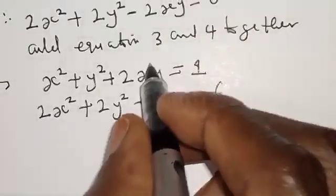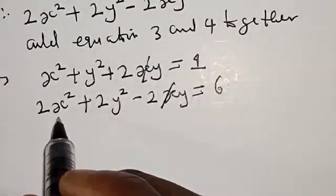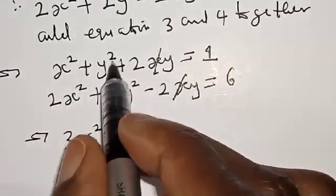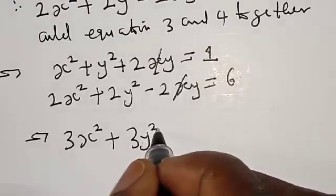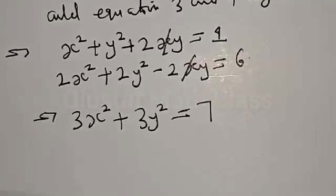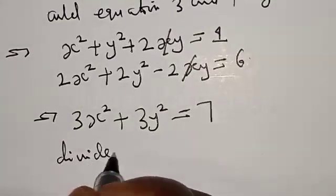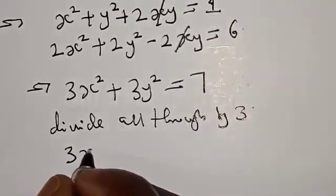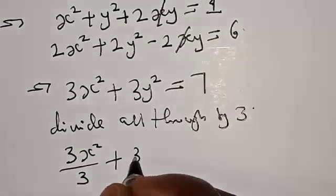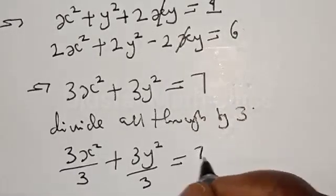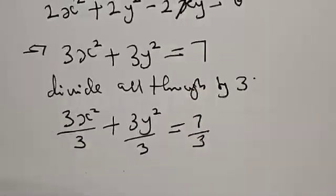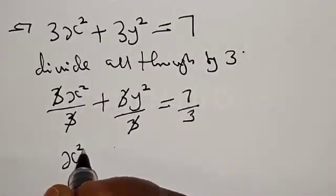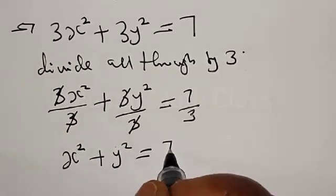Equation 4 is 2s squared plus 2y squared minus 2sy equal to 6. Now if you add the two, the 2sy terms cancel. s squared plus 2s squared gives 3s squared, and y squared plus 2y squared gives 3y squared. So we have 3s squared plus 3y squared equal to 6 plus 1, that is 7. Dividing both sides by 3, we are left with s squared plus y squared equal to 7 over 3.